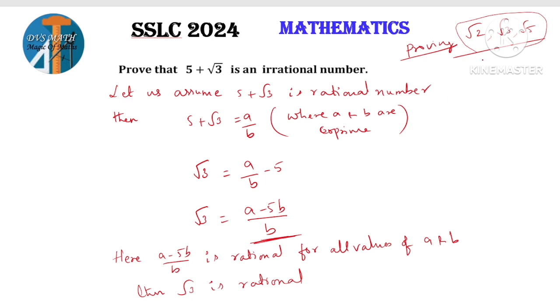Now for single terms, we already proved root 2, root 3, root 5 are irrational separately. We proved them irrational.